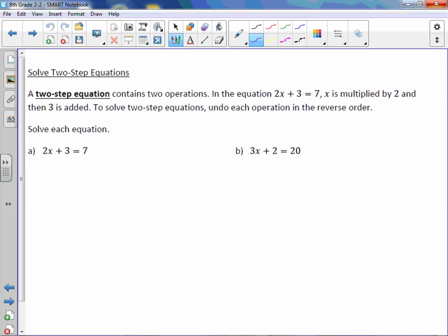Solve each equation. So again, in letter A, 2 is multiplied by x, and then 3 is added. We have to work in reverse order. Since plus 3 was the last thing that occurred, we need to get rid of it by subtracting 3 on both sides.